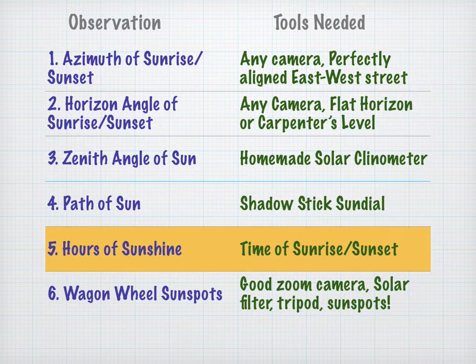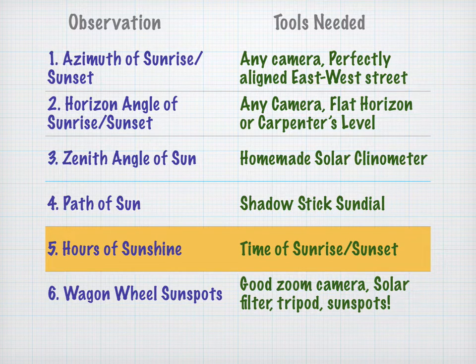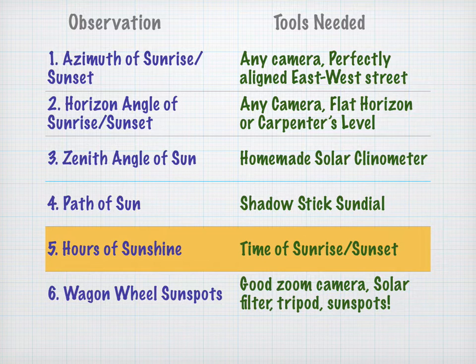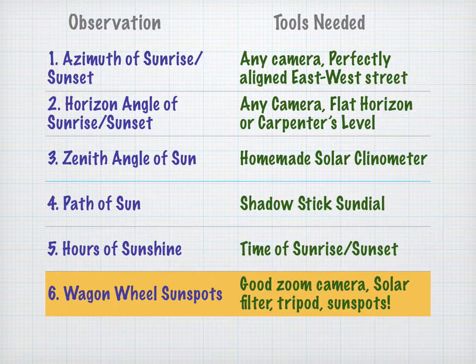The number of hours of sunshine is interesting because the equinox is supposed to be an equal day and night. To do this, you'll need the time of sunrise and sunset, which you can either look up, or you can record yourself with your own observations.